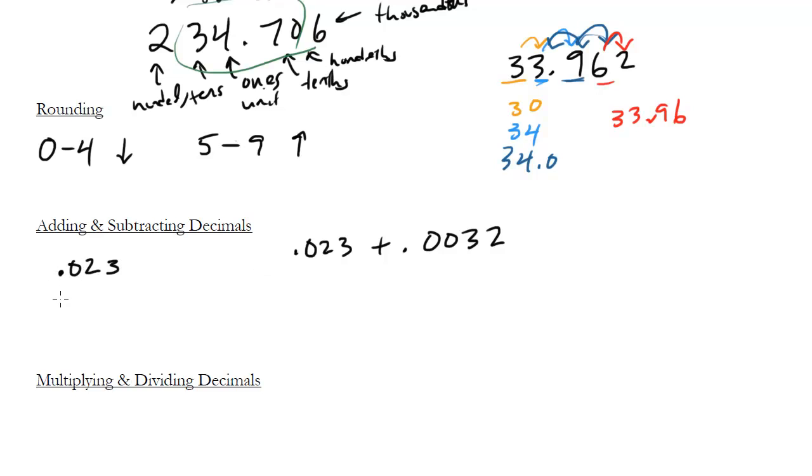So I get .023, match up the decimal places, .0032, throw in a zero there, and now I can just add down. Rather than trying to guess, it just gets confusing. If you're not using your calculator, it's best to do it this way, so we would get .0262. And subtracting obviously works the same way.